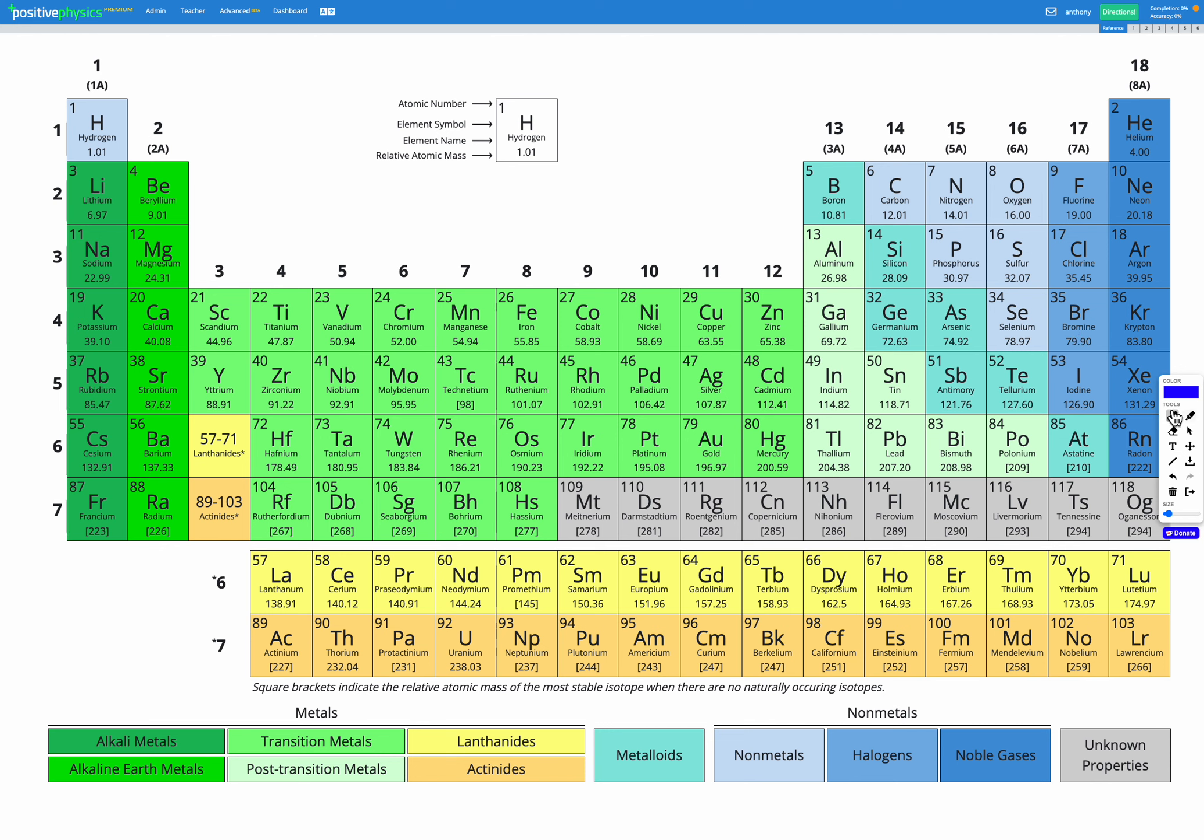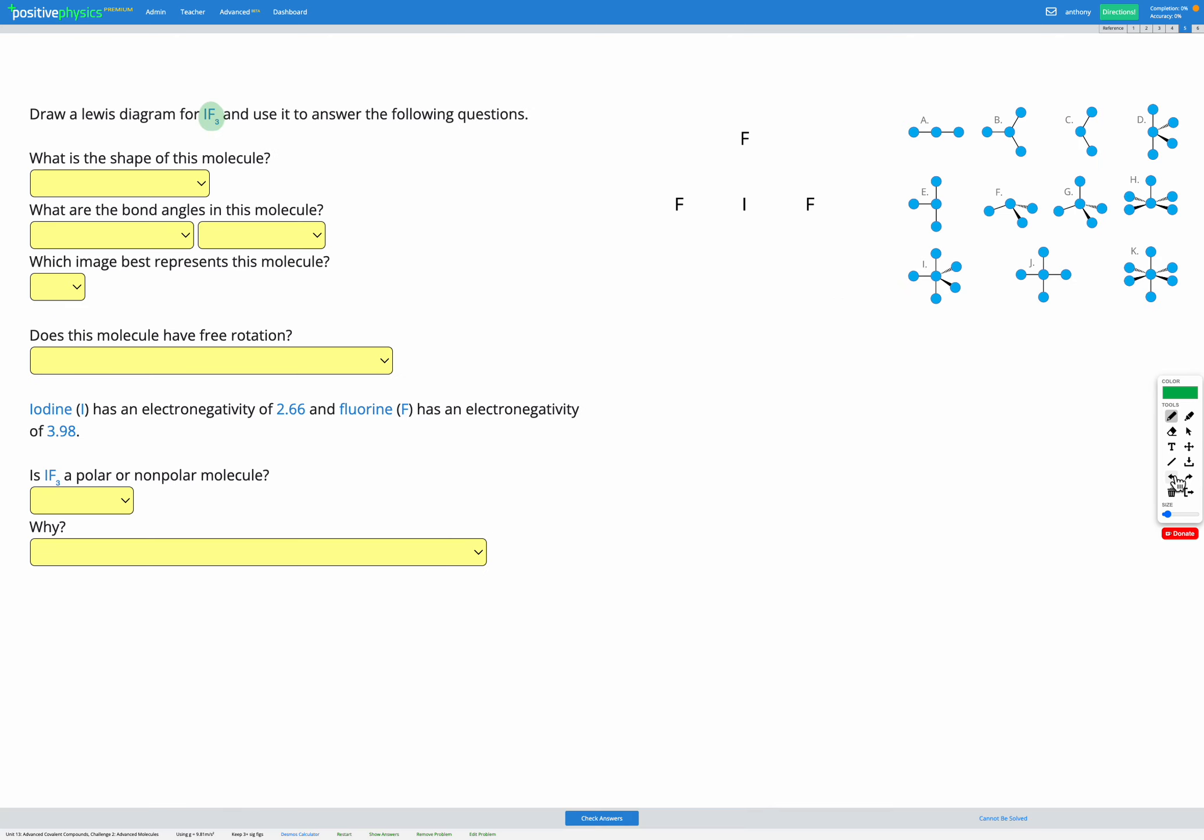First looking at our periodic table we need to find iodine and fluorine. So here's iodine and here's fluorine. We can see both of those are in group 17 which according to our shortcut means both of those have 7 valence electrons.